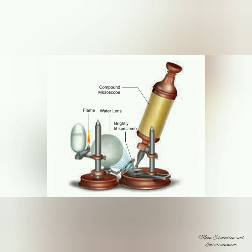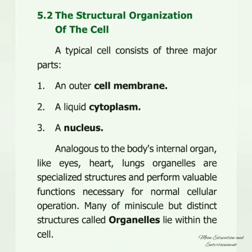The Structural Organization of a Cell: A typical cell consists of three major parts — an outer cell membrane, a liquid cytoplasm, and a nucleus. Analogous to a body's internal organs like the heart, eyes, and lungs, specialized structures perform valuable functions necessary for normal cellular operations. Many distinct structures called organelles lie within the cell.